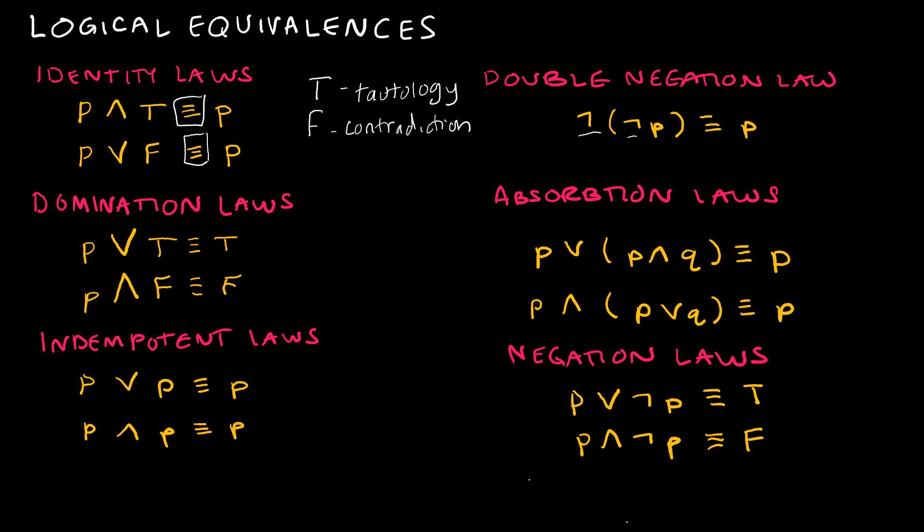If we have P or not P, that's true. But if we have P and not P, that's false. So again, tautology, contradiction.